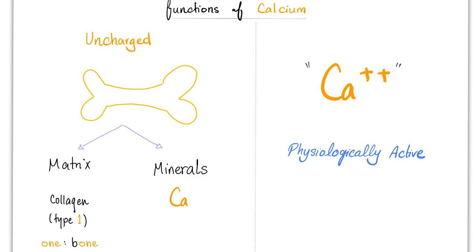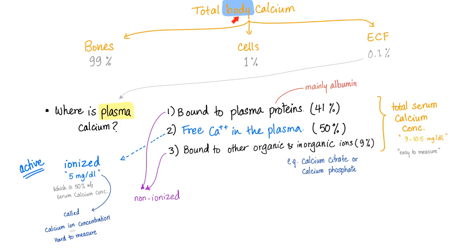So in tetany, what's happening is decreased ionized calcium. This is the calcium that we care about. Now, total body calcium. The total calcium in your body. 99% of the calcium in your body is in bones, 1% in cells, only 0.1% in the ECF. And believe it or not, this is the one that we care about.